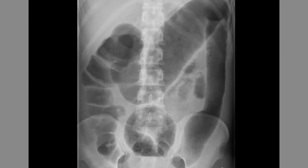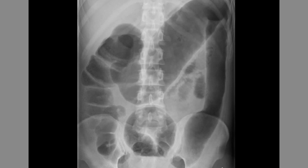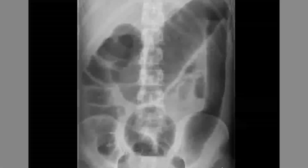This abdominal radiograph shows megacolon — specifically non-toxic megacolon without any mural abnormalities. You can appreciate the dilated large bowel: the ascending colon, transverse colon, and descending colon are all visible. However, looking inside, there is no mural or mucosal abnormality. This type of megacolon is therefore classified as non-toxic megacolon without mural abnormalities.